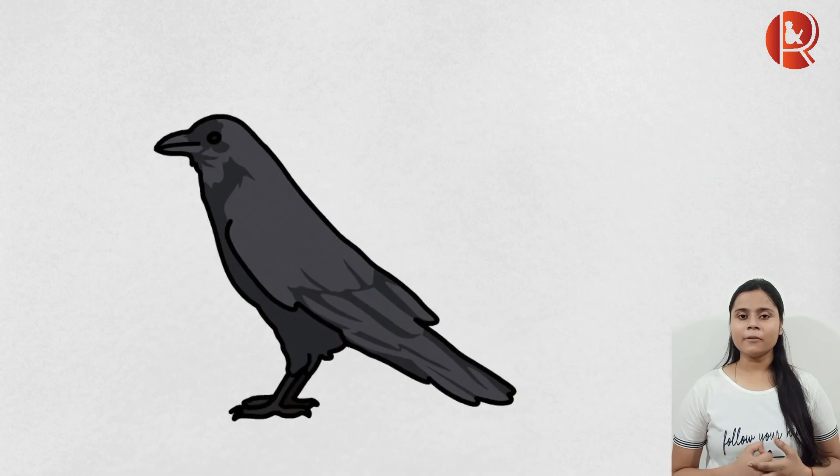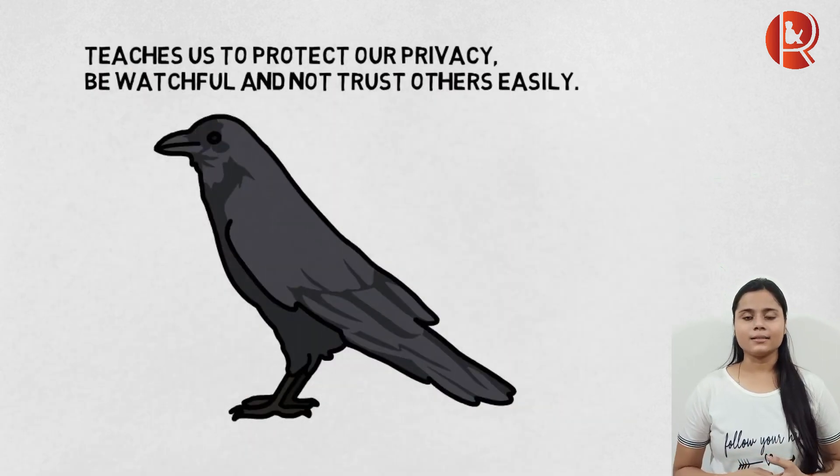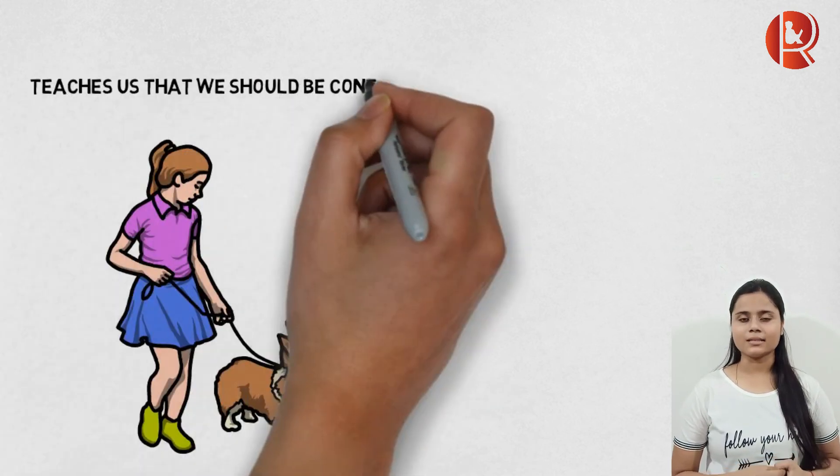The crow teaches to protect our privacy, be watchful and not trust others easily. The dog is content with what he gets and is very faithful to his master.